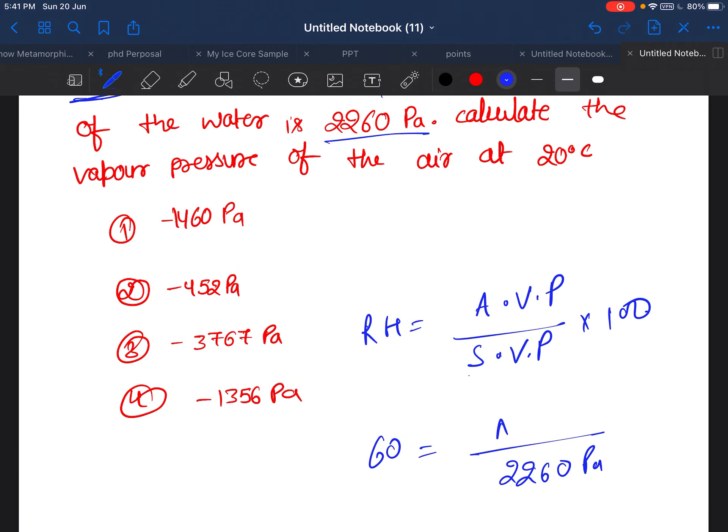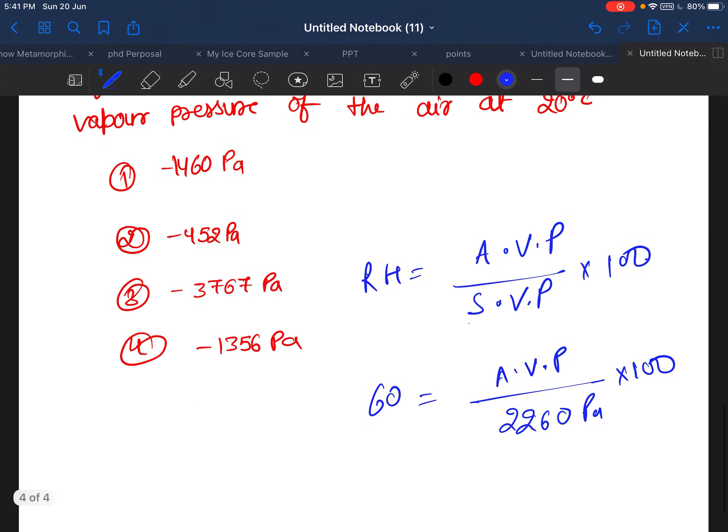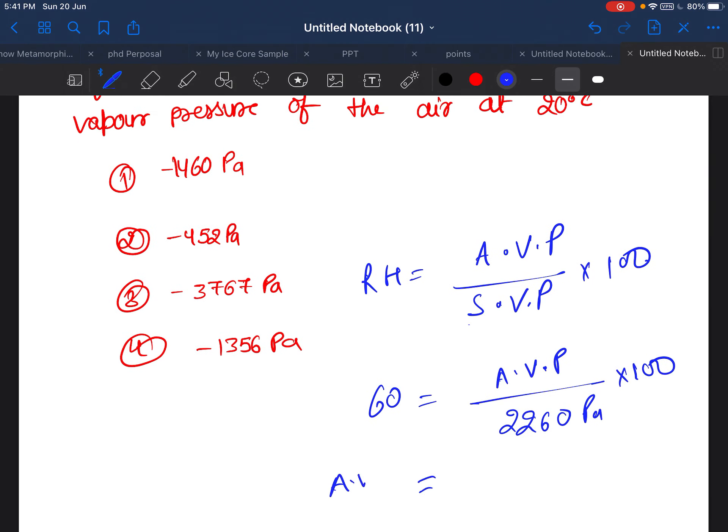We have to find the actual vapor pressure. When you solve this, you will get actual vapor pressure equal to 1356 pascals.